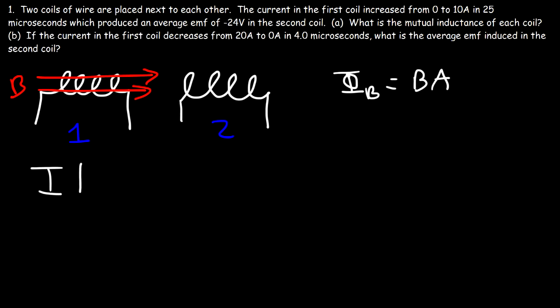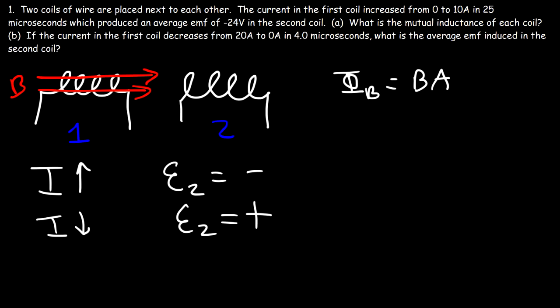If the current is increasing, the induced EMF in coil two will be negative — it opposes the current that creates it. If the current in coil one is decreasing, the induced EMF will be positive; it wants to support the decrease in current. You need to understand that the mutual inductance of each coil is the same: M₁₂ equals M₂₁, so we can simply call it M.